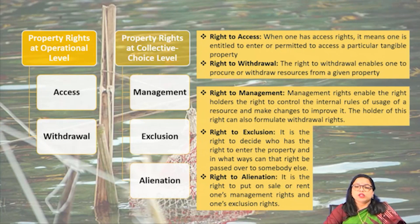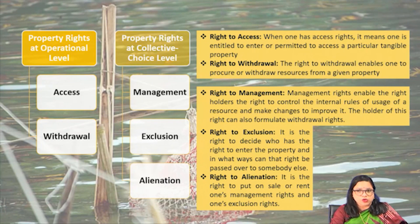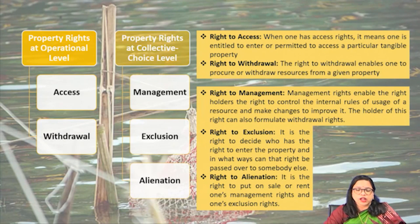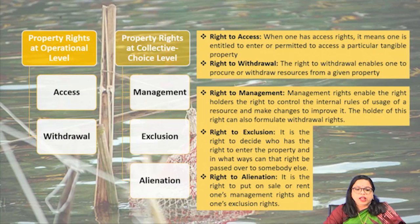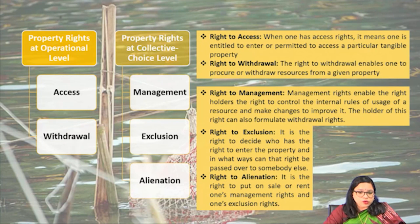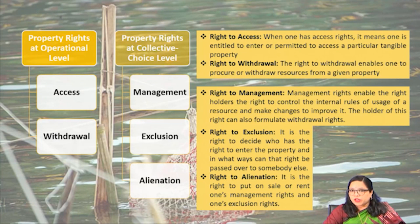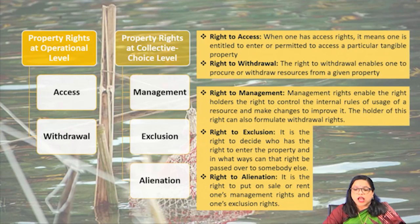Who is the authority to decide the collective choice rights? According to Schlager and Ostrom, management rights, exclusion rights, and alienation rights together make up the collective choice rights in case of managing a resource. Management rights enable the right holder to control the internal rules of usage of a resource and to make changes for its betterment. Management rights holders also have the right to decide who can procure the resource and in what ways — that is, they formulate the withdrawal rights at the operational tier. For example, in a cricket team, the managing body decides which players can play the match and in what order.